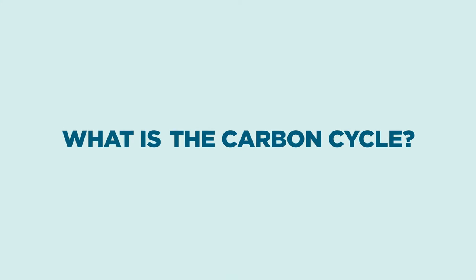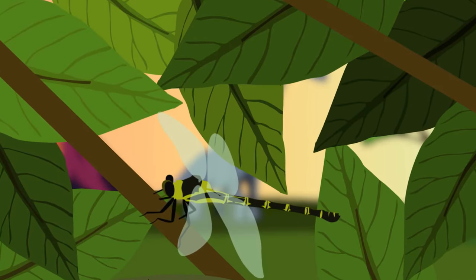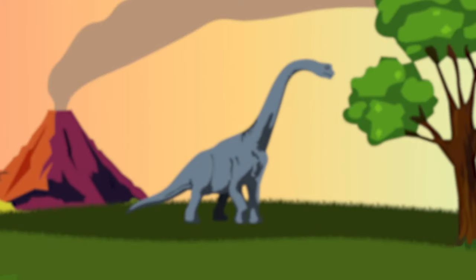What is the carbon cycle? Carbon is the chemical backbone of all life on Earth. All of the carbon we currently have on Earth is the same amount we have always had.